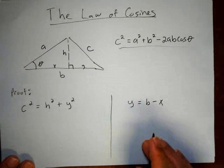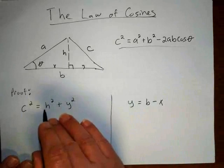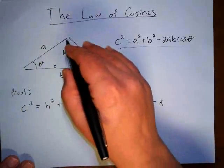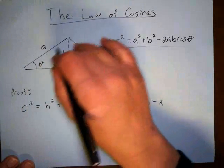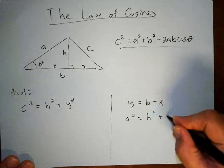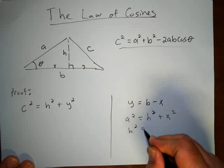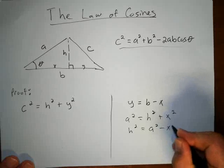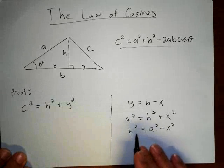That's the first substitution. Now let's look at H squared. Looking at the left triangle, the two legs are H and X, and the hypotenuse is A. So A squared equals H squared plus X squared, which means H squared equals A squared minus X squared.